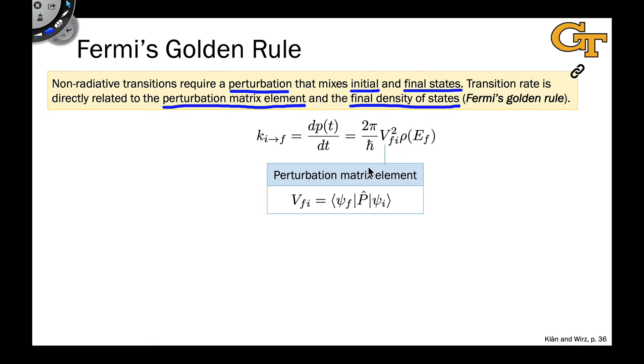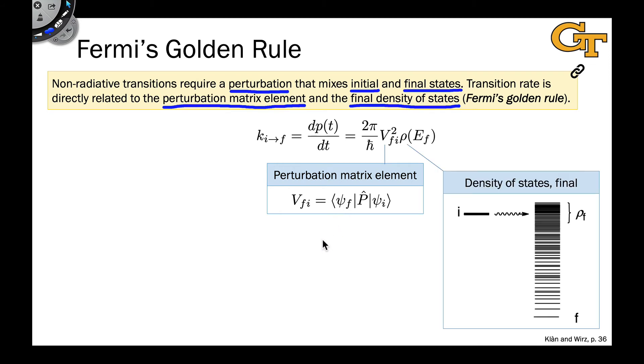So V here, as it's defined, is the perturbation matrix element from an initial state, psi I, to a final state, psi F. We've seen this previously, familiar with this. And rho is what we call the density of states.